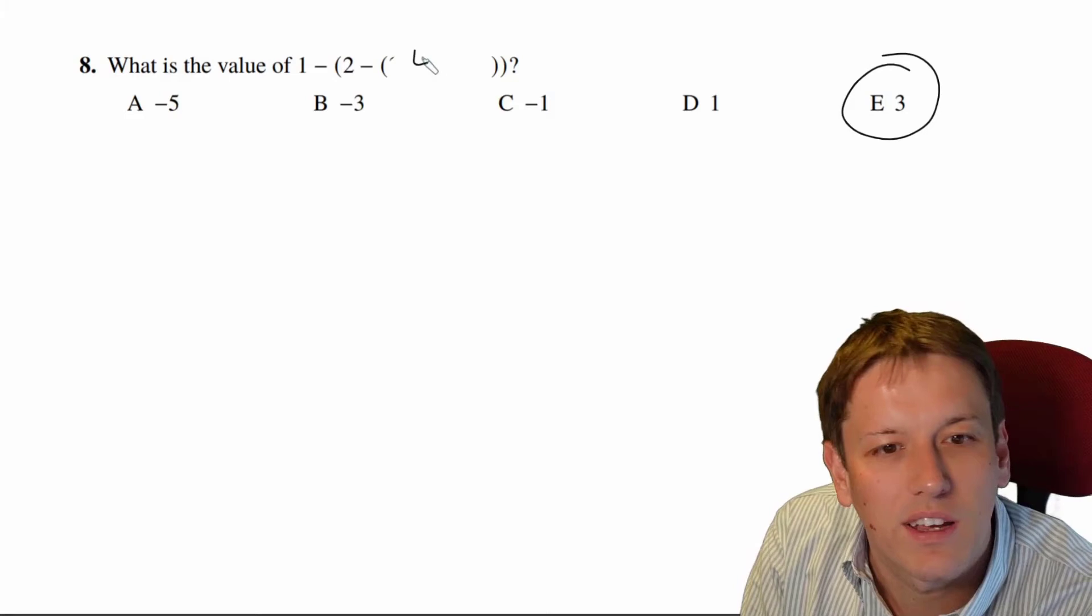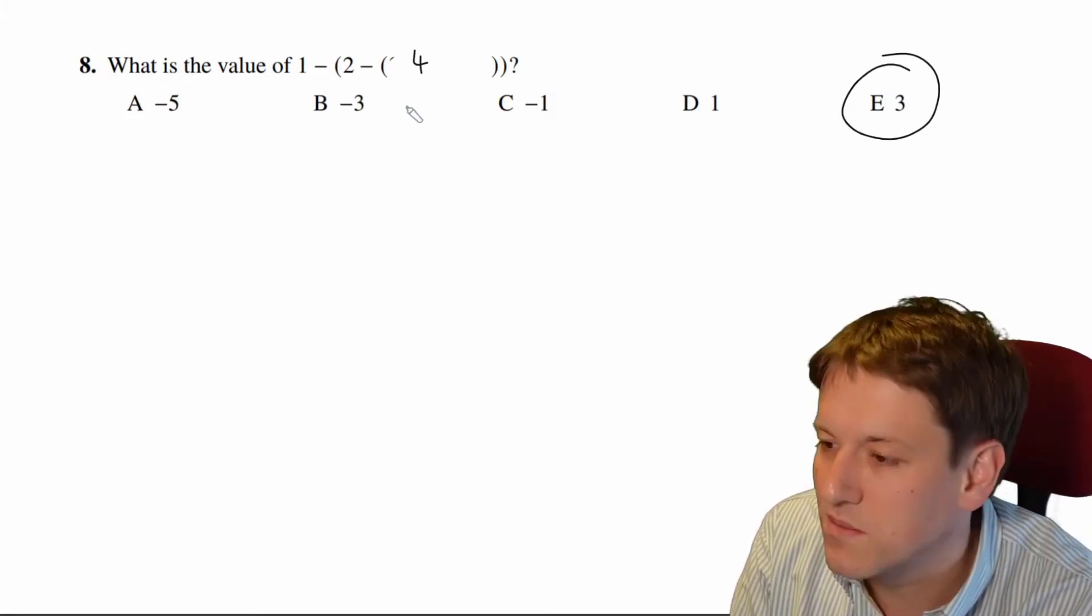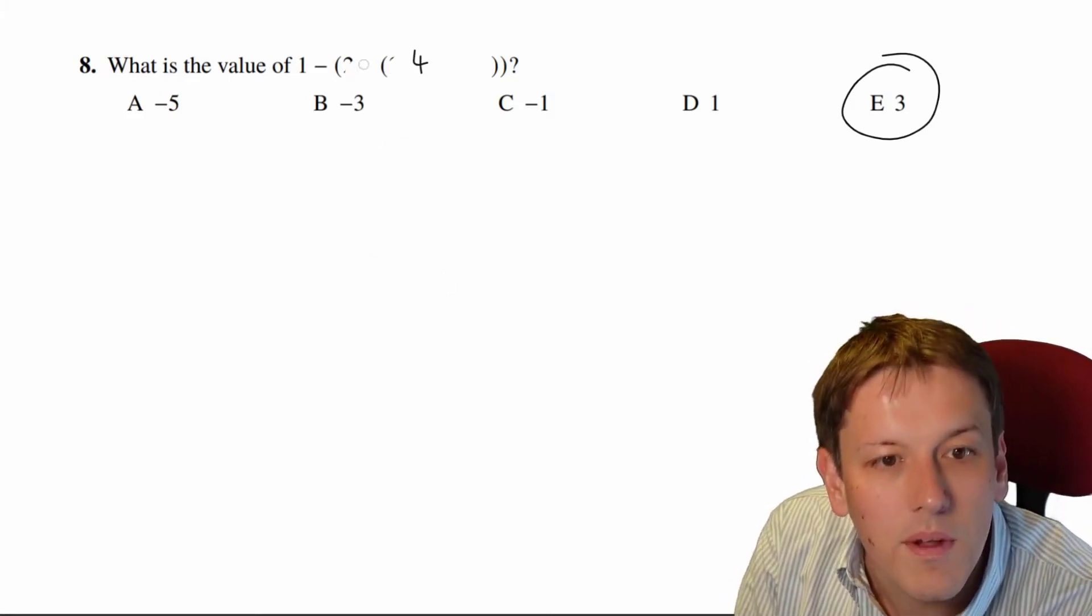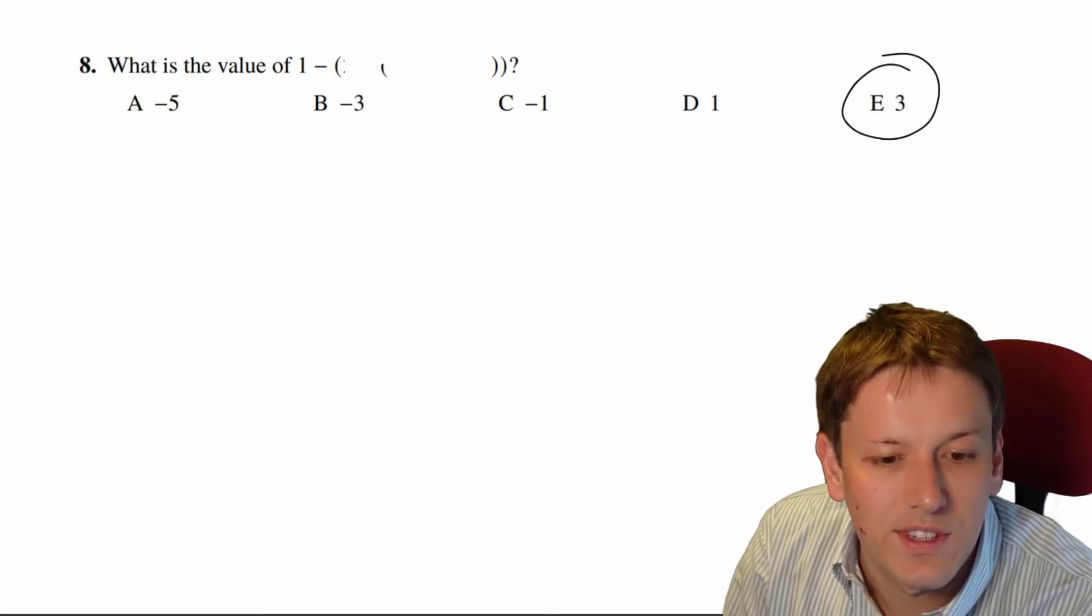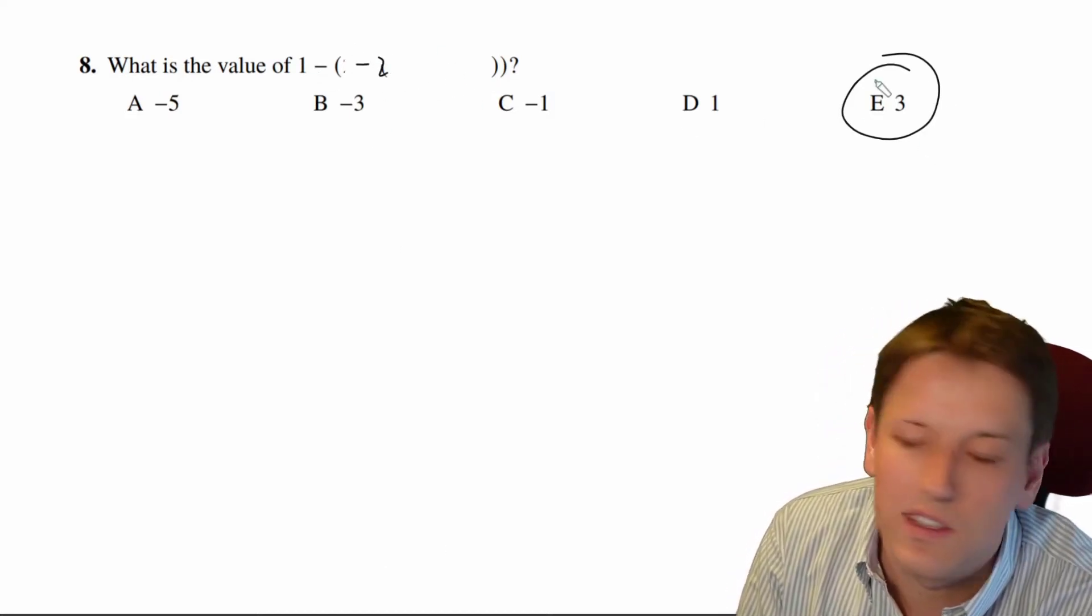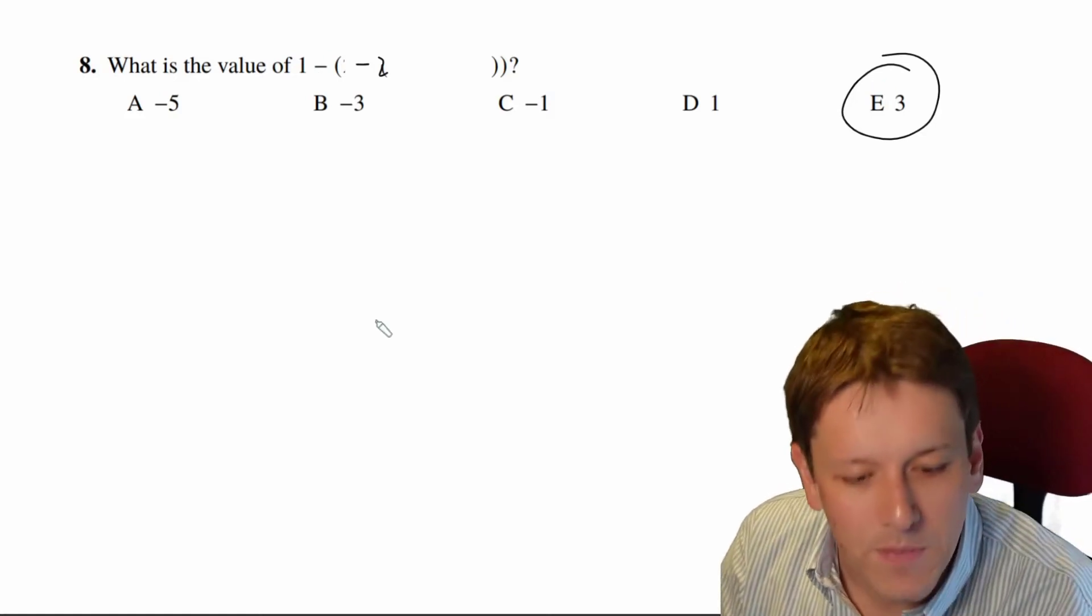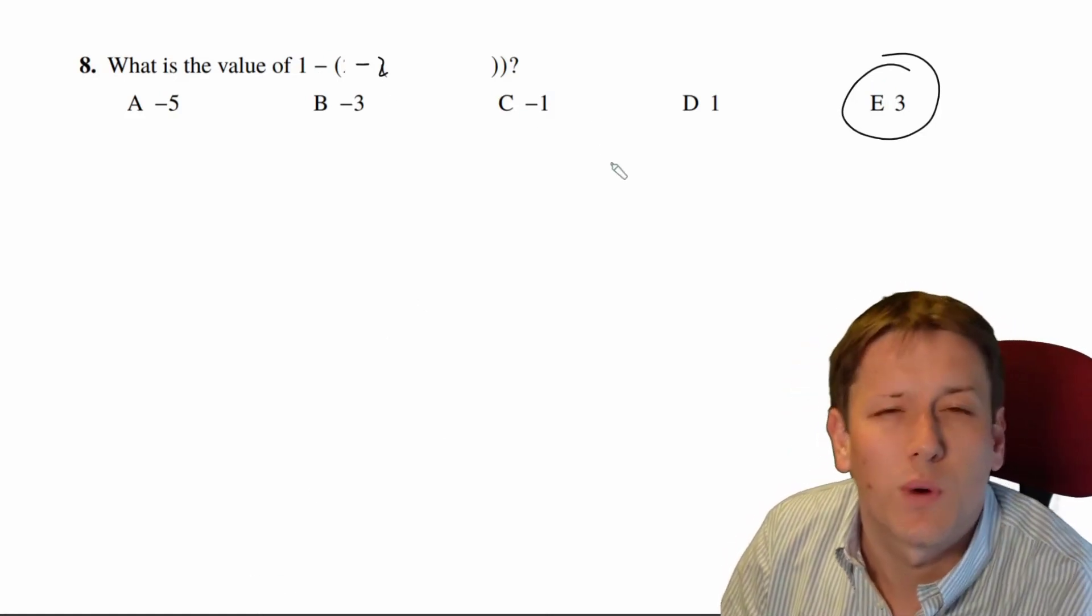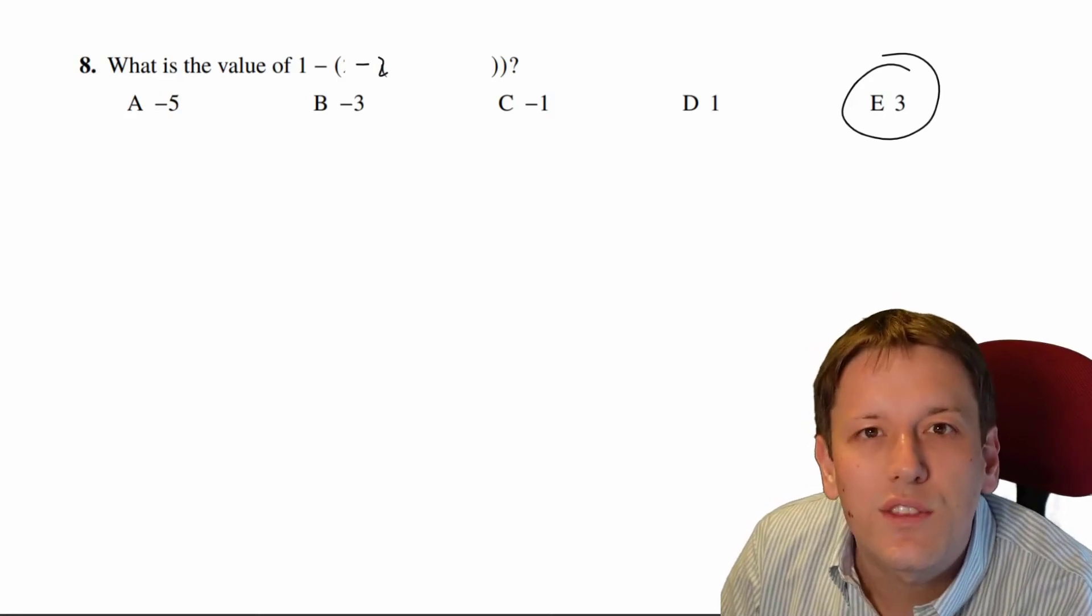Here we're gradually just getting rid of the brackets, right, and then we do 2 minus 4 gives us minus 2. And now I've gone this far, I may as well finish, and then we get just left with 1 minus minus 2, which gives us that same answer of 3. Okay, so did the same thing there twice in very similar ways. Hopefully that's clear and you got the answer 3.